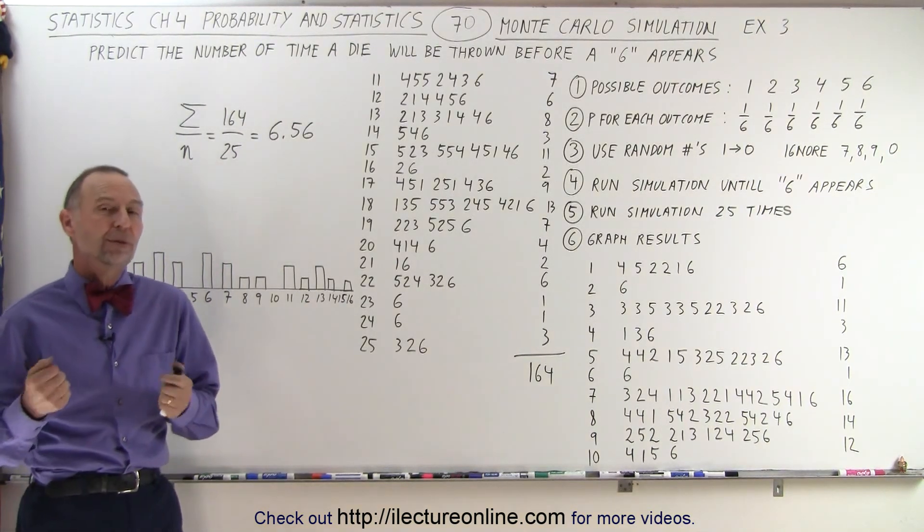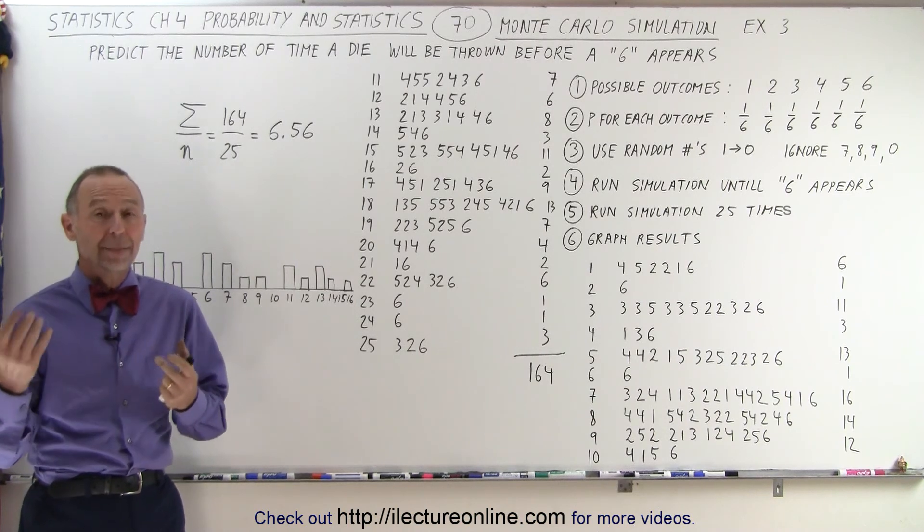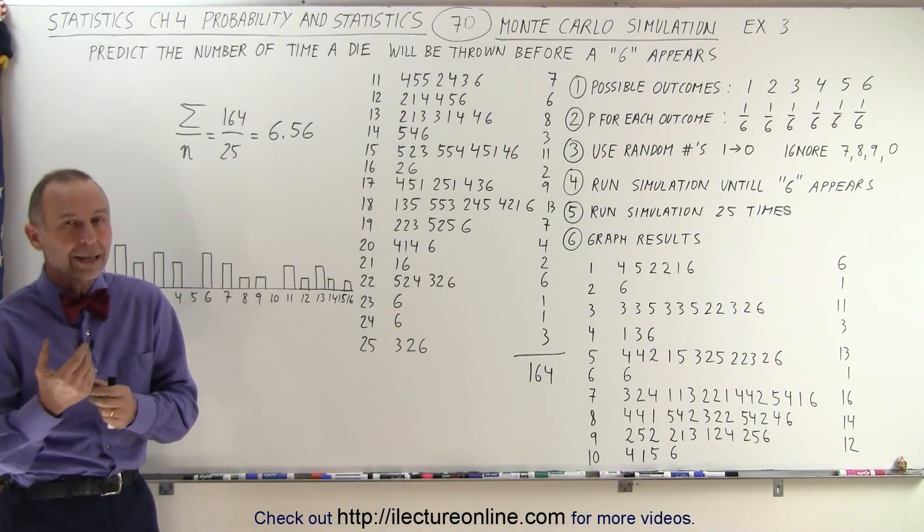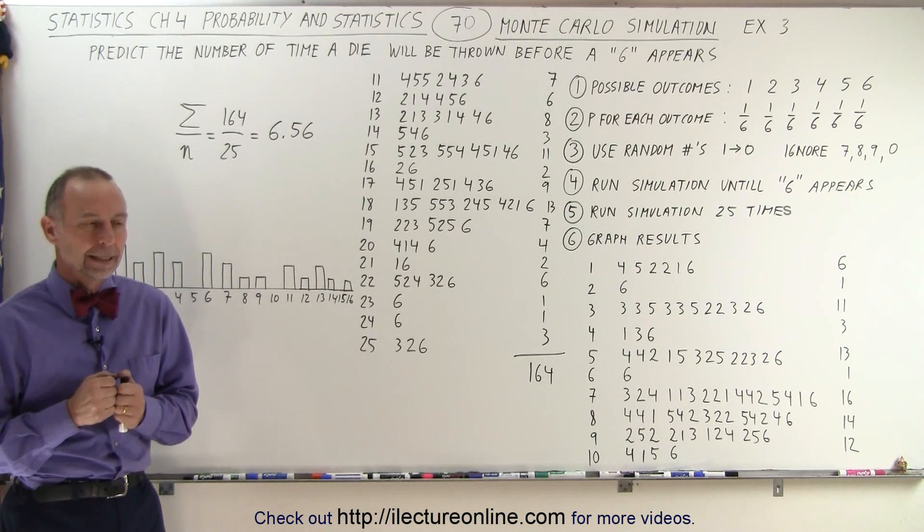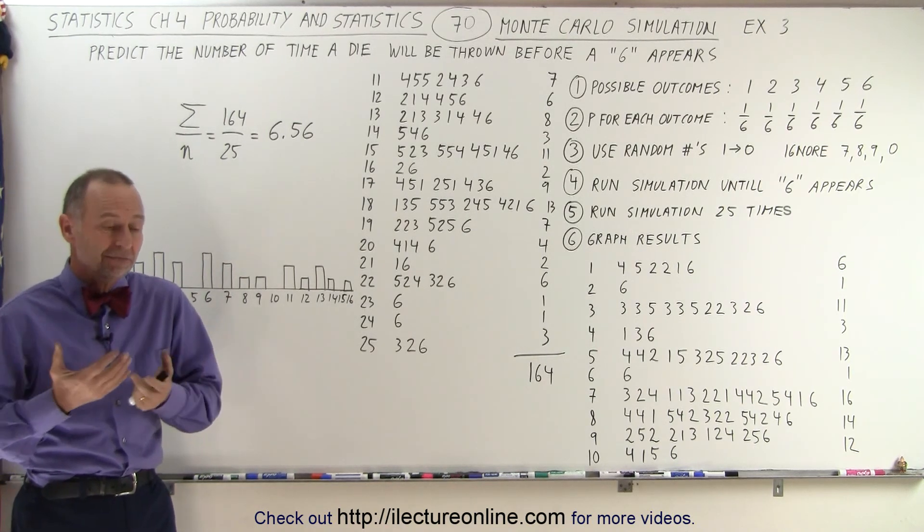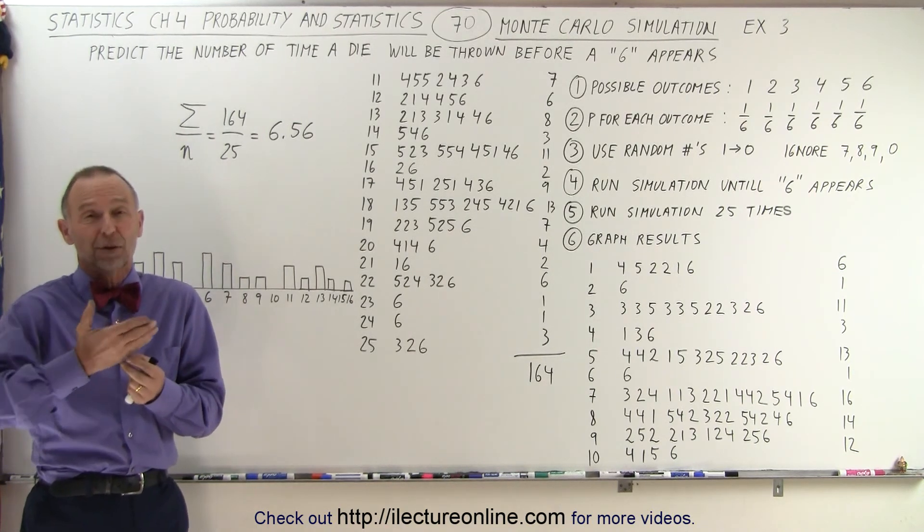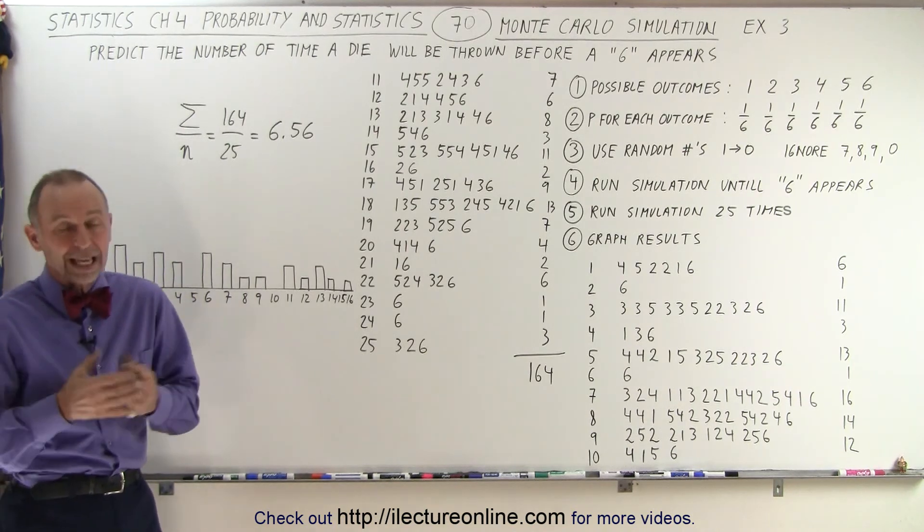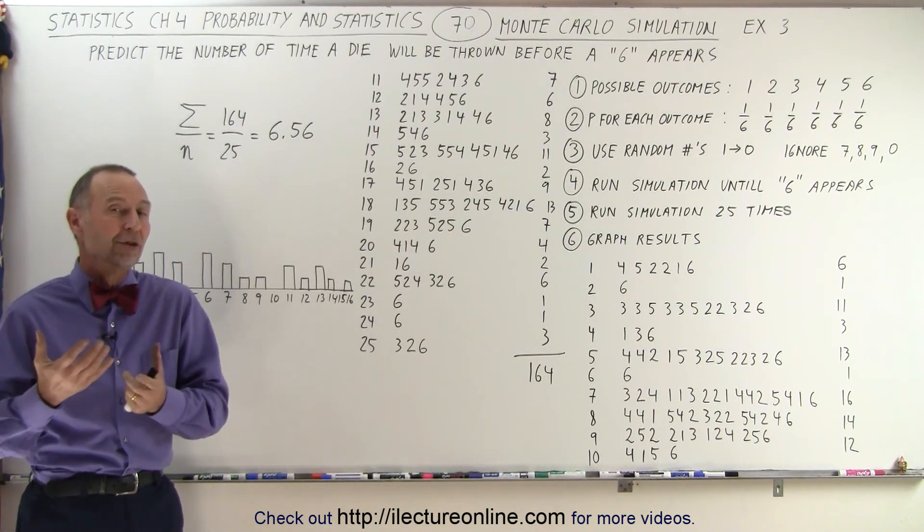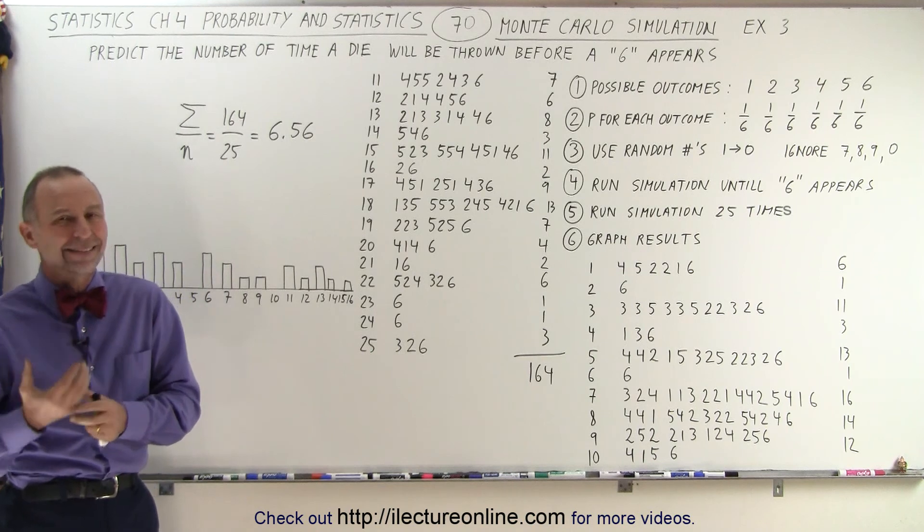What we're going to do is try to figure out how many times you should throw a die before a six appears. Now logic says that if you have one in six probability to throw any one of the six numbers, it would take about six throws on average before you get a six.